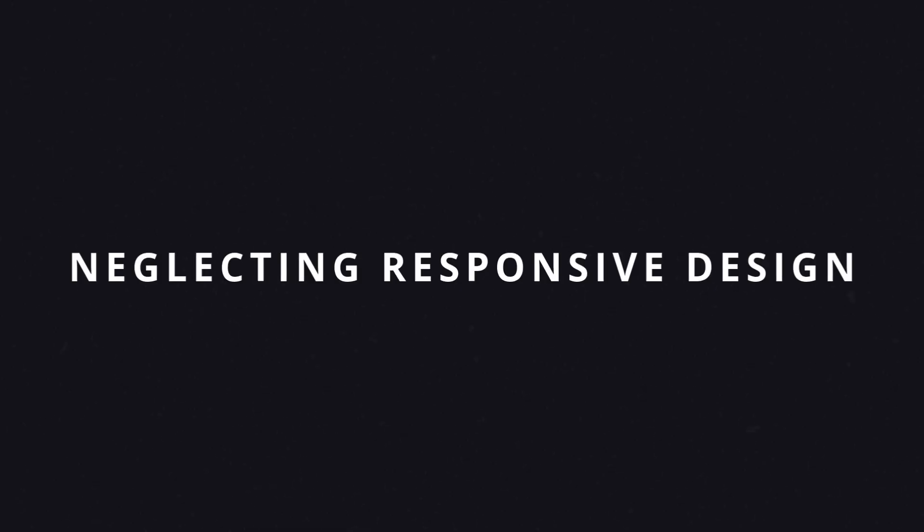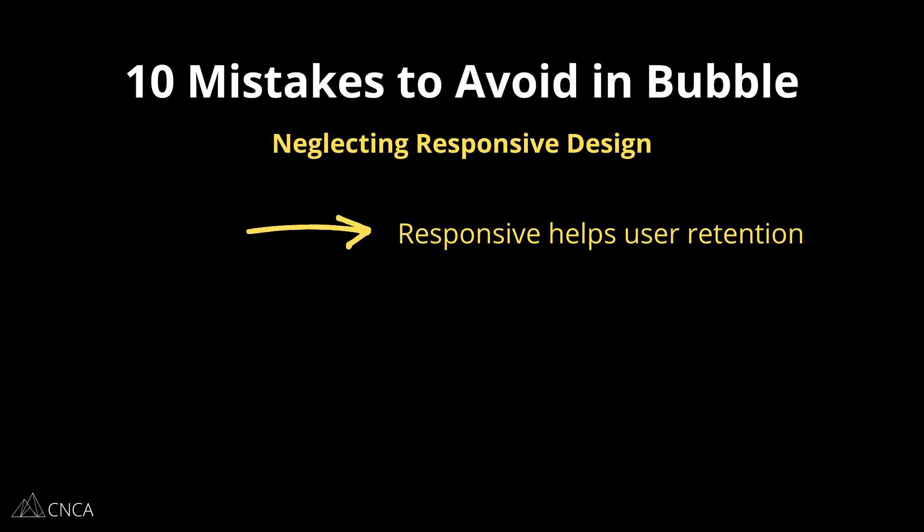The next mistake is neglecting responsive design. This speaks to how accessible your page designs are on different screen sizes. The Bubble platform offers a lot of different responsive settings that you can work with, but if not used correctly, your app may not look or function well on different devices. So make sure you're testing and adjusting for mobile, tablet, and desktop views. Don't underestimate the impact a responsive design has on user retention. If your app just isn't usable on different types of devices, you could be leaving out a large part of your market.